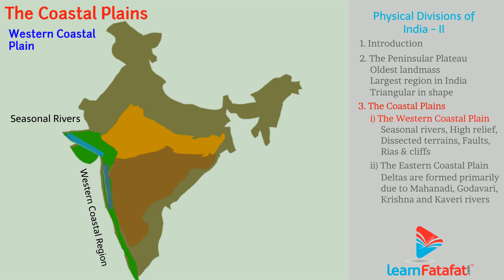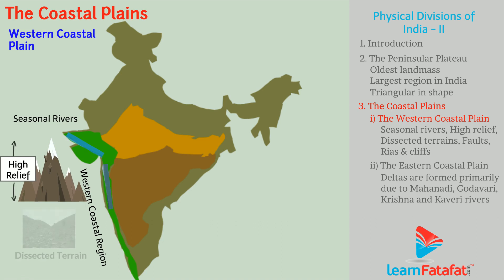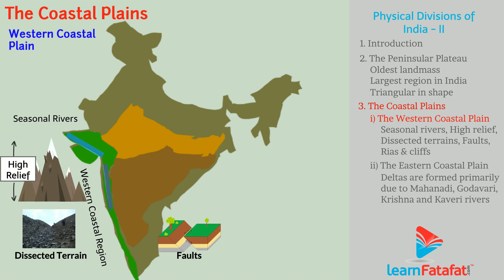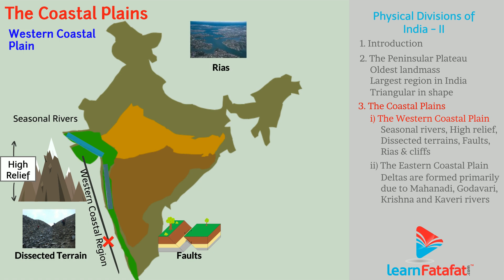The western coastal plains are characterized by seasonal rivers, high relief — that is, a significant difference between high and low surface levels — dissected terrain, and faults. The coastal border is not regular. There are long narrow inlets of the sea coast, and features such as creeks and cliffs, that is, steep high places of rock.